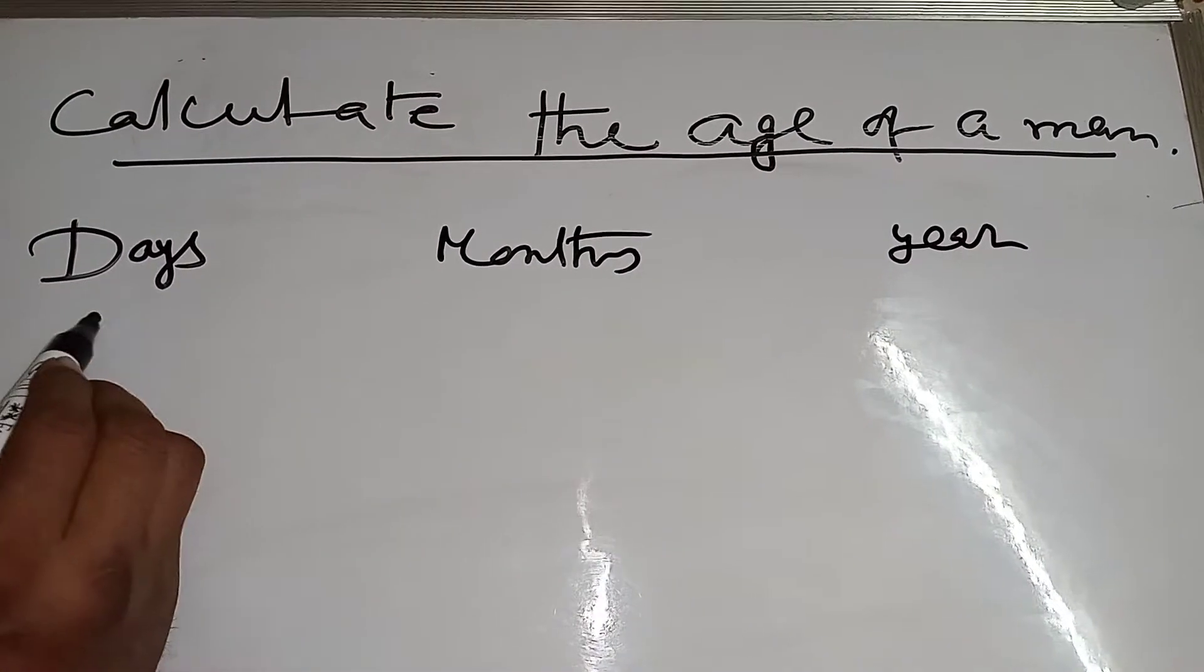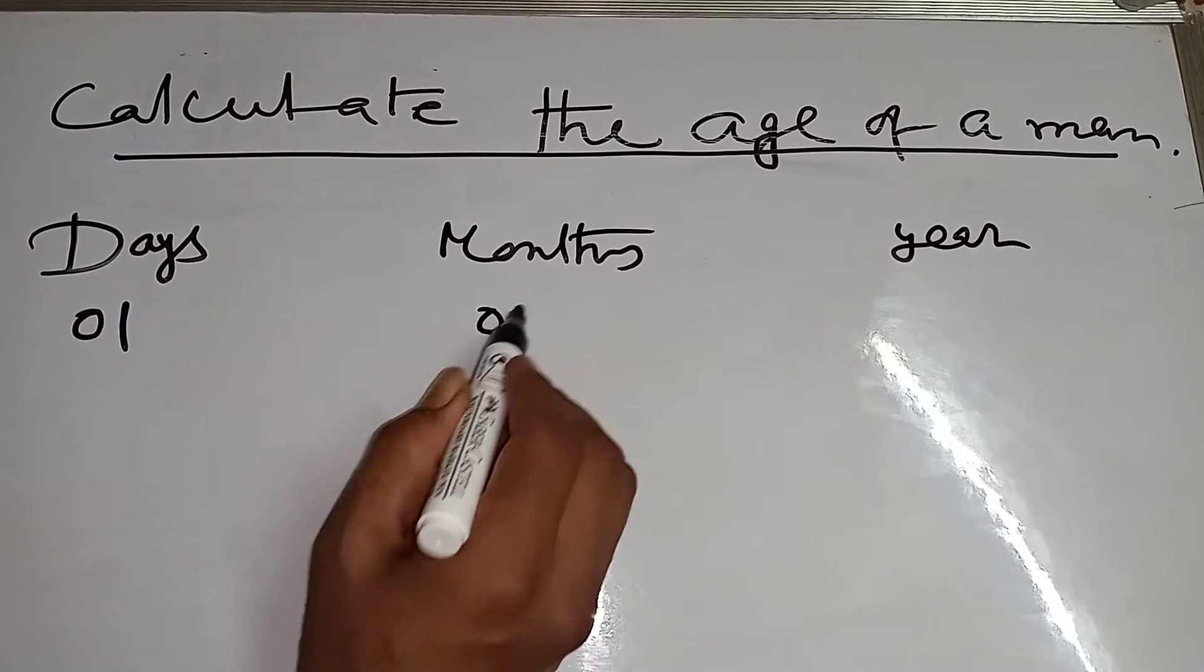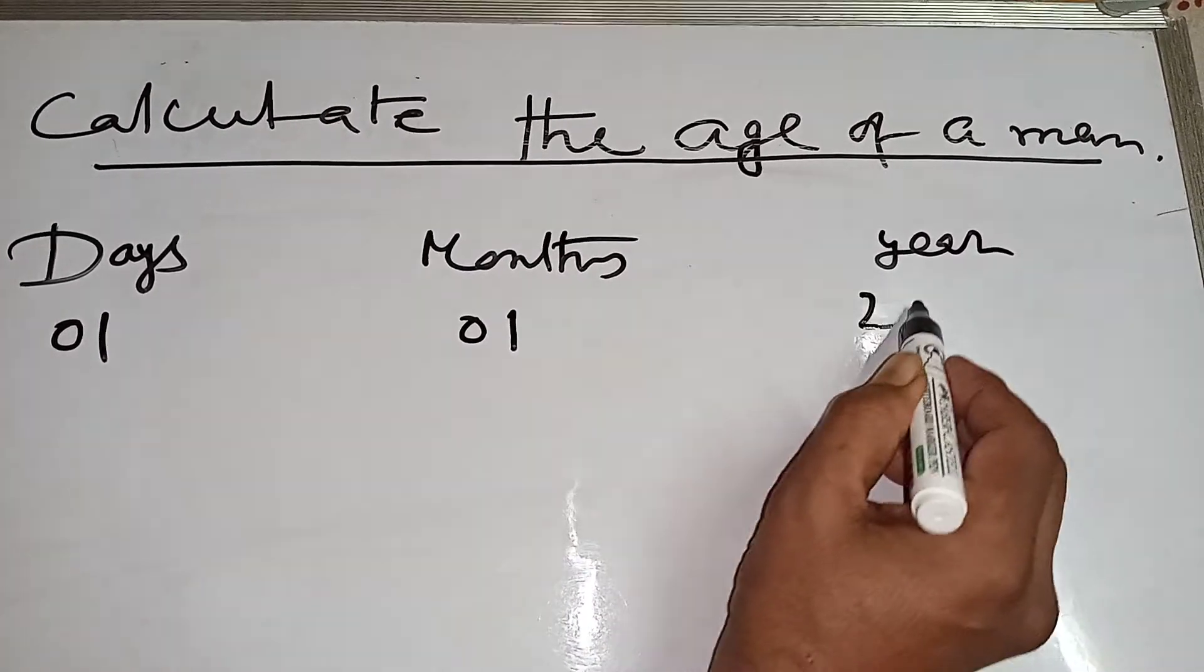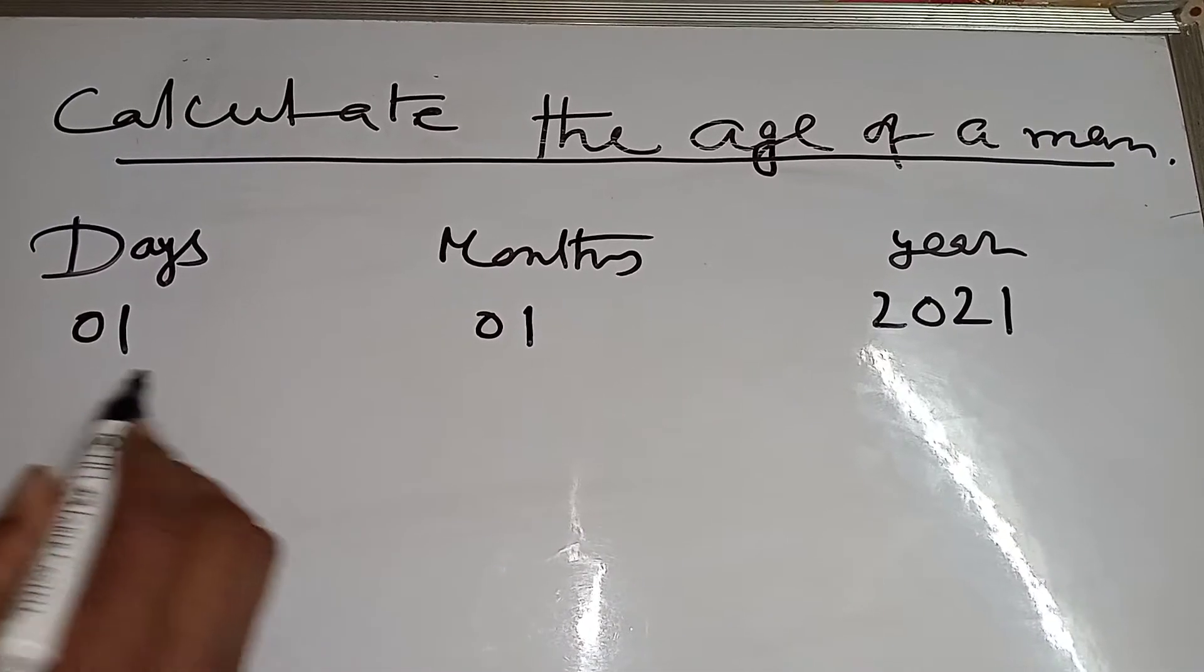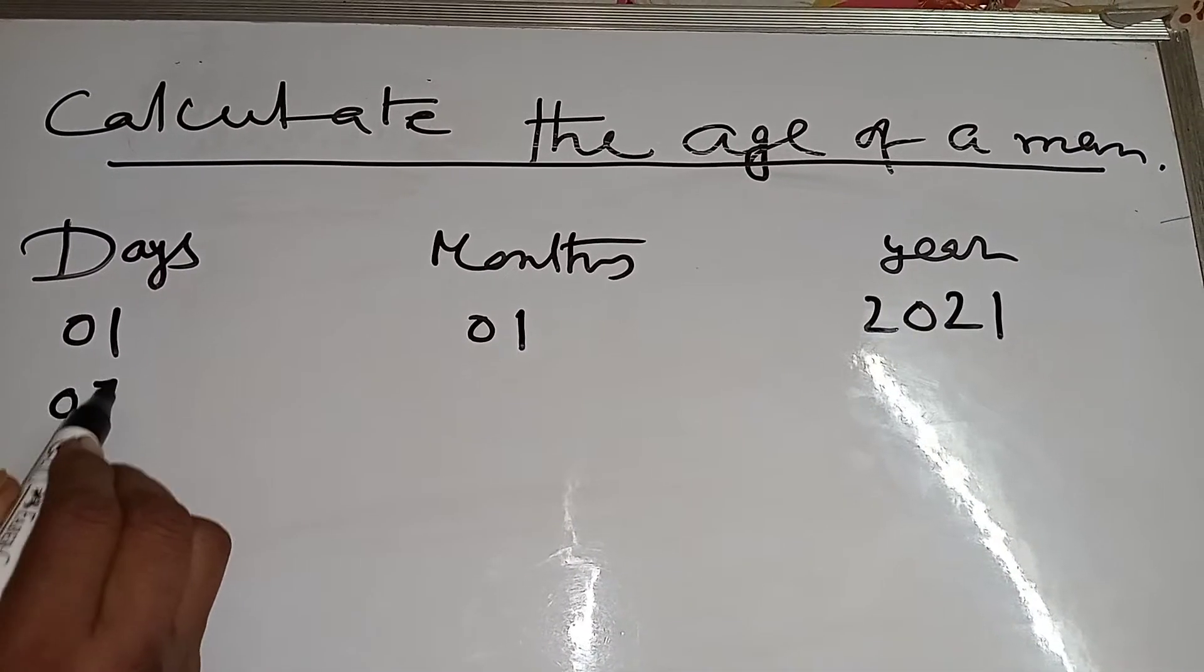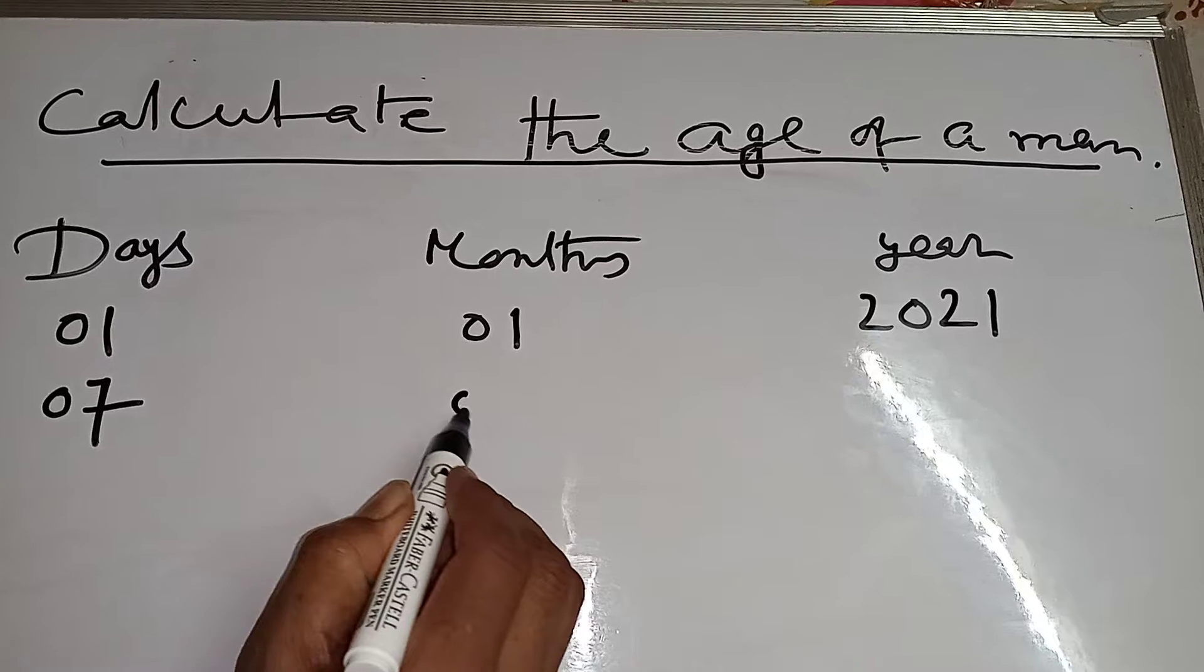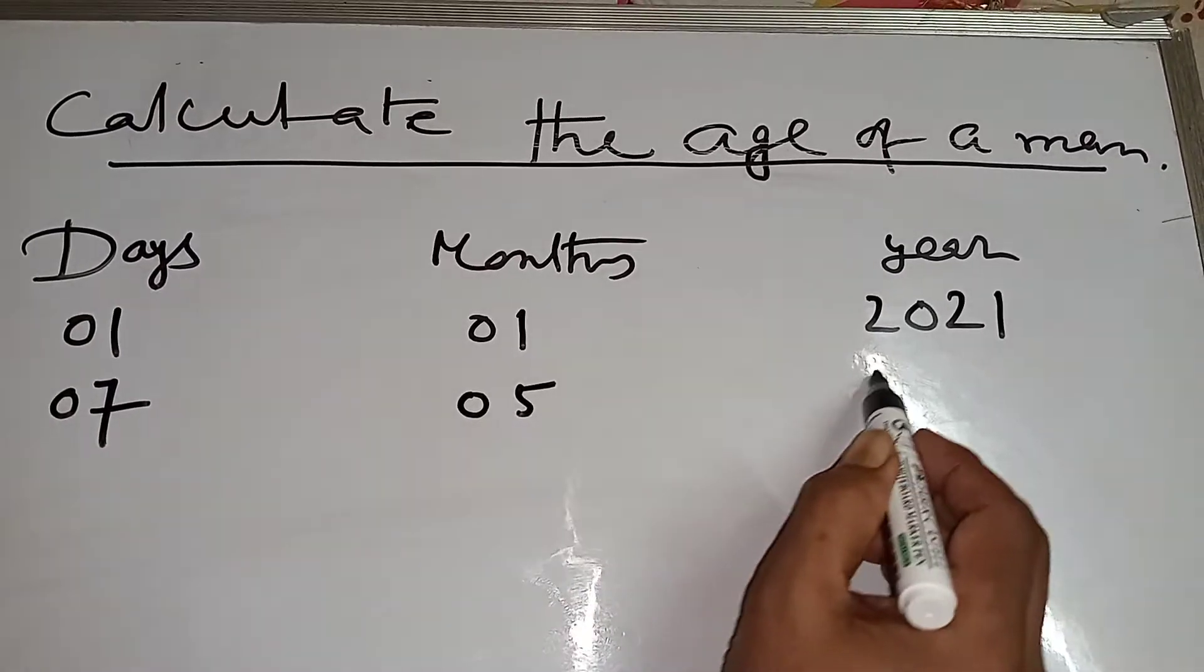Today date is 01, 01, 2021. Suppose a man was born on 07, 05, 1981.